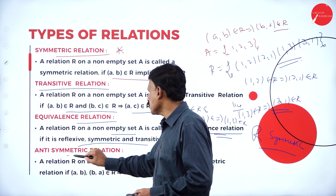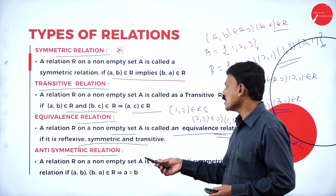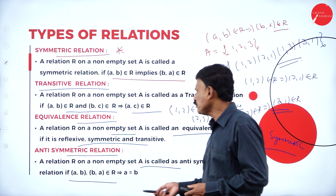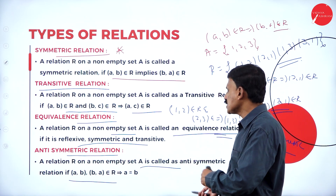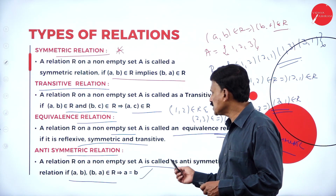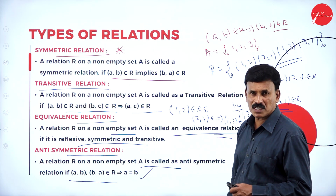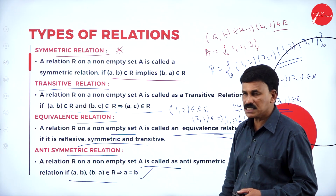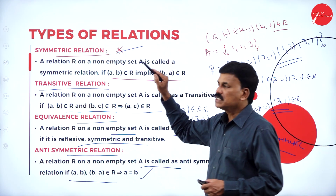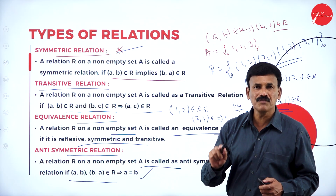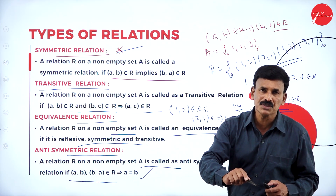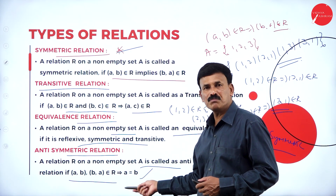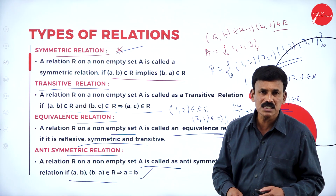Now let us know regarding anti-symmetric relation. A relation R on a non-empty set A is called anti-symmetric if (a, b) and (b, a) both belong to R implies a is equal to b. Compare this with symmetric relation: (a, b) belongs to R implies (b, a) belongs to R. For anti-symmetric: (a, b) and (b, a) both in R implies a = b.